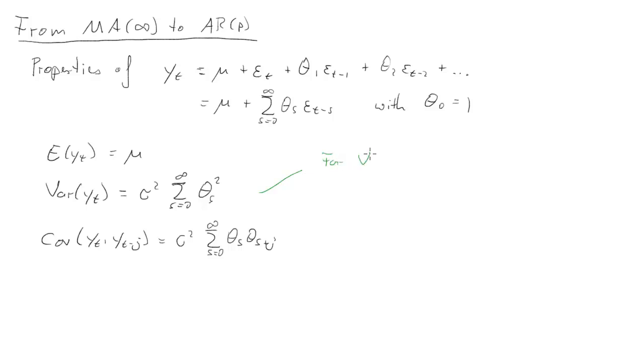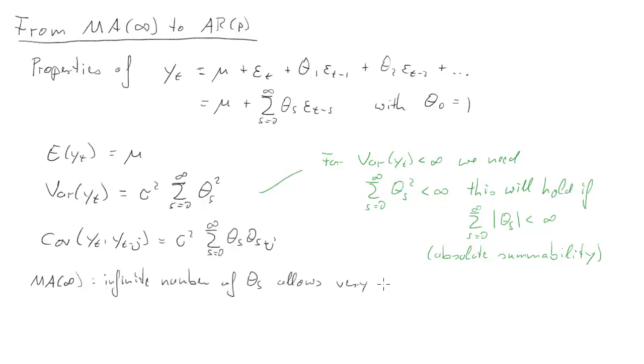That's all as you've seen before. It turns out for that variance of Yt to be finite what we require is that the sum of the squared coefficients is smaller than infinity. And this will hold if the sum of the absolute values of the MA coefficients is smaller than infinity. We also call that the absolute summability condition.